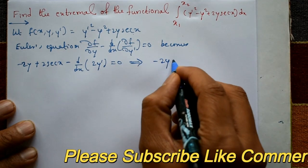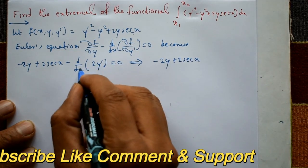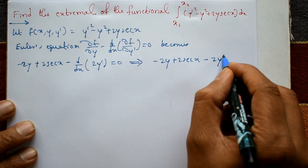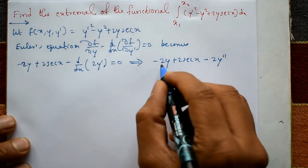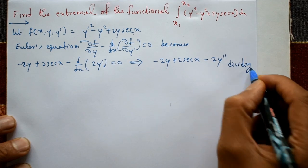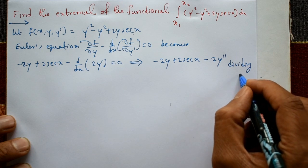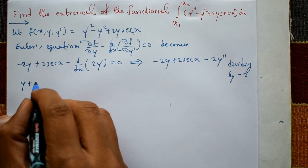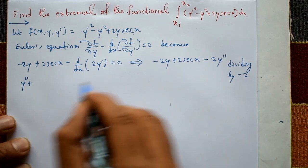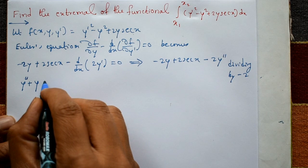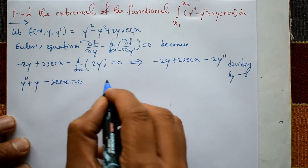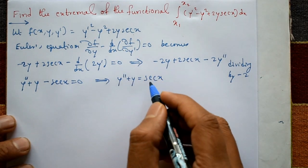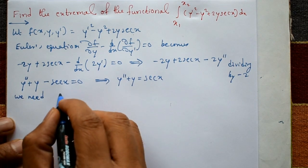This gives -2y + 2·sec(x) - d/dx(2y') = 0, which is an ordinary differential equation. That becomes -2y + 2·sec(x) - 2y'' = 0. Dividing through by -2 gives y'' + y = sec(x).